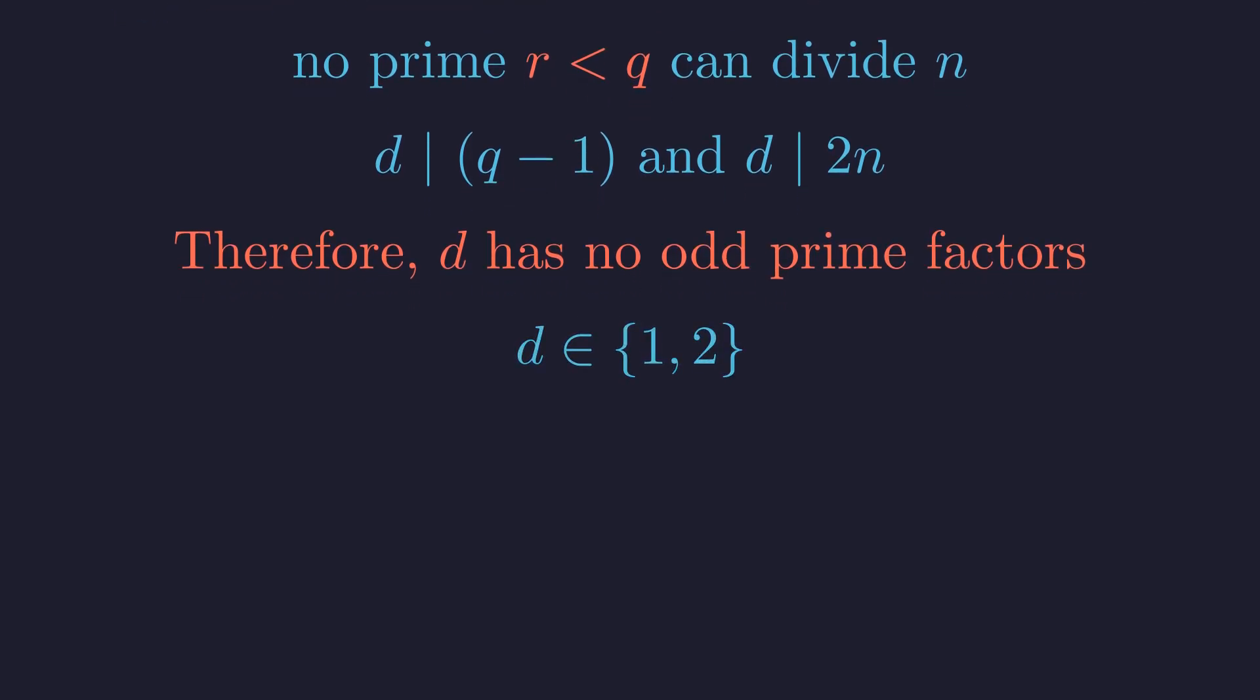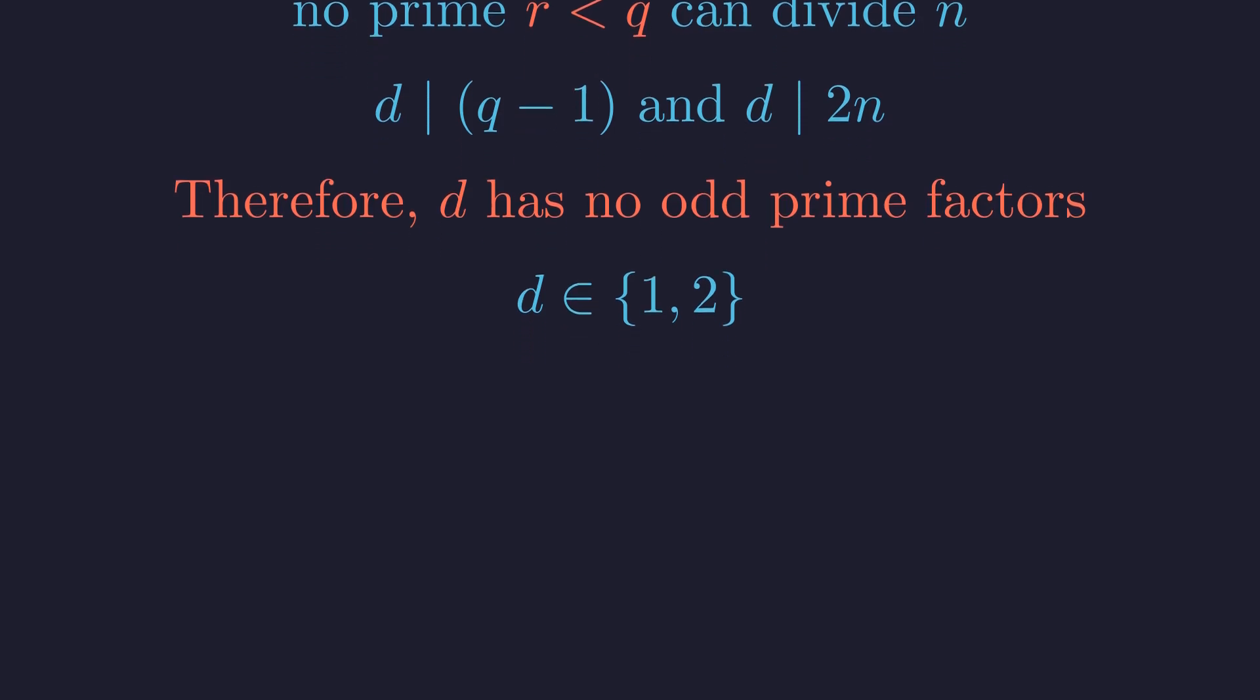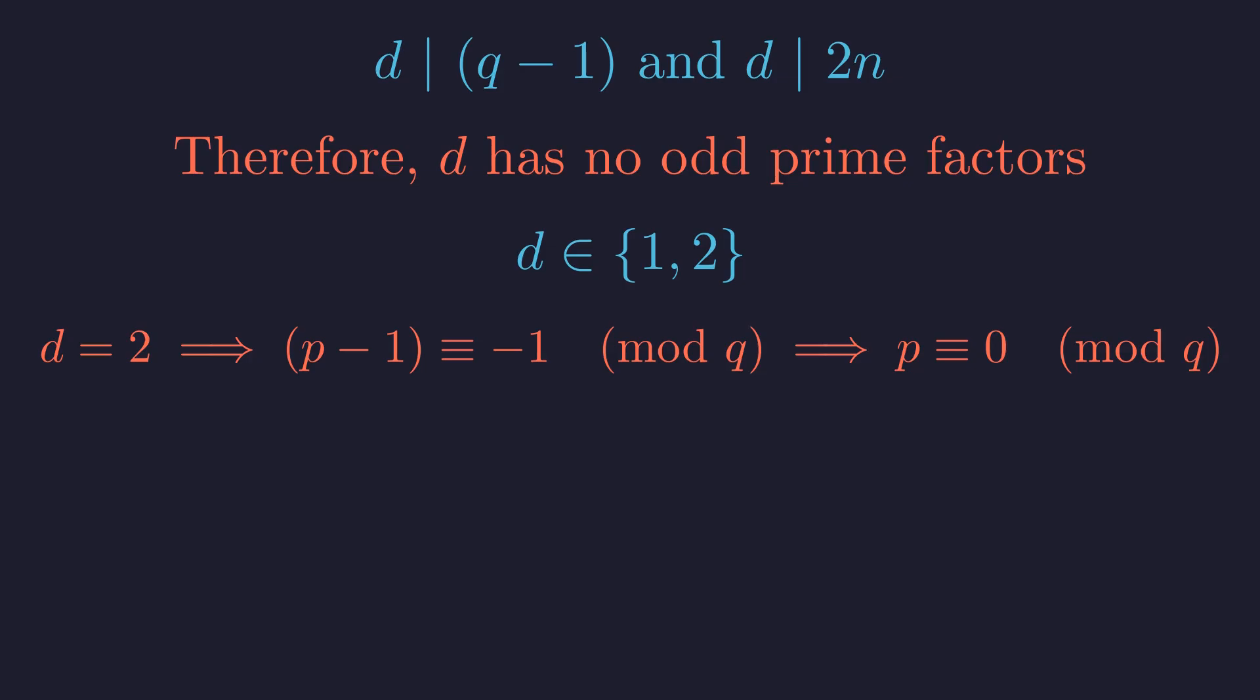Thus, d must be either 1 or 2. However, d cannot be 1. If it were, p-1 would be congruent to 1 modulo q, which would contradict our congruence. The only possibility is d equals 2. This implies p-1 ≡ -1 (mod q), which means p is divisible by q. But this is a contradiction.